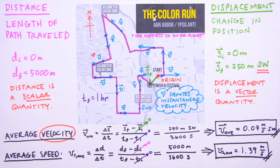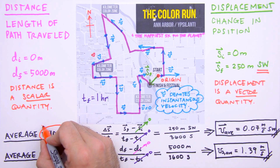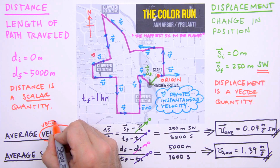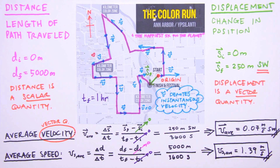Velocity is a vector quantity — it describes both the magnitude and direction of a runner's motion. Speed is a scalar quantity.